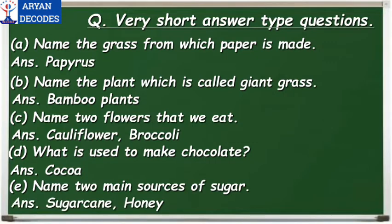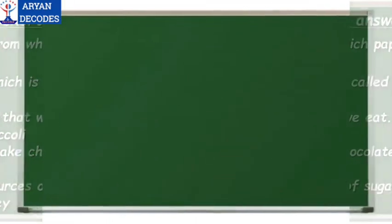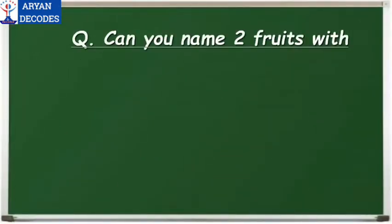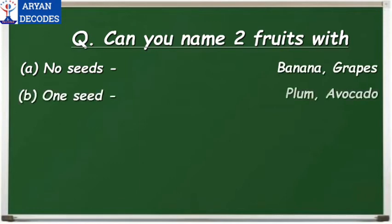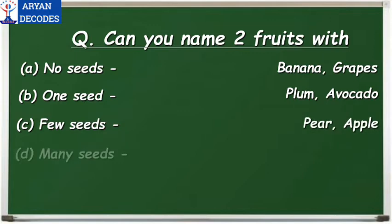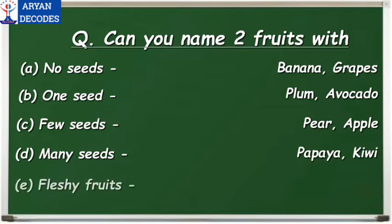Now let's move on to the next worksheet. Can you name two fruits with no seeds? The answer is banana and grapes. Next, one seed — the answer is plum and avocado. Next, few seeds — the answer is pear and apple. Next, many seeds — the answer is papaya and kiwi. And the last is fleshy fruits — the answer is orange and mango.